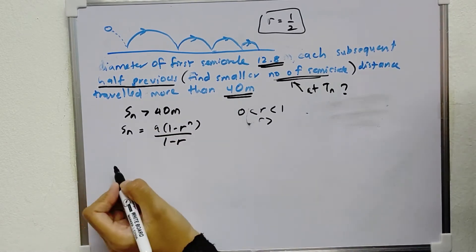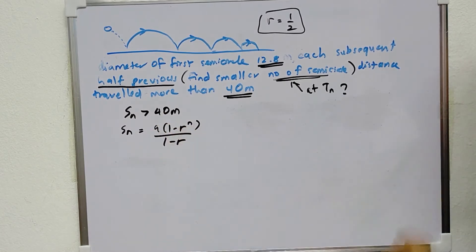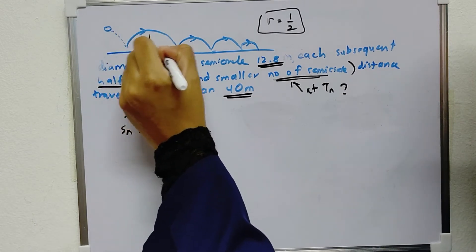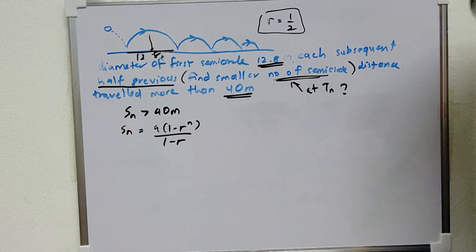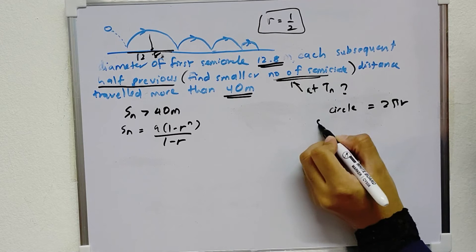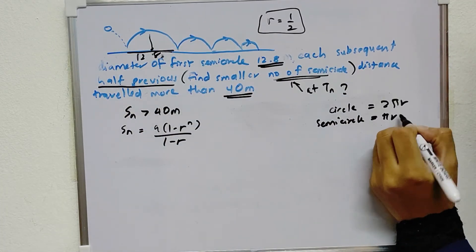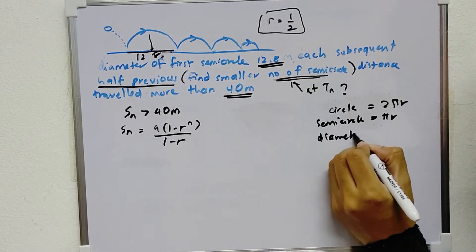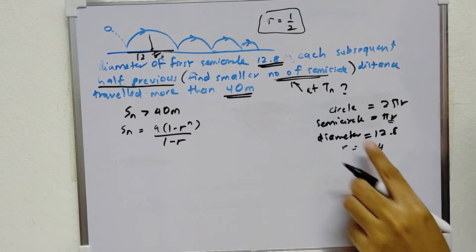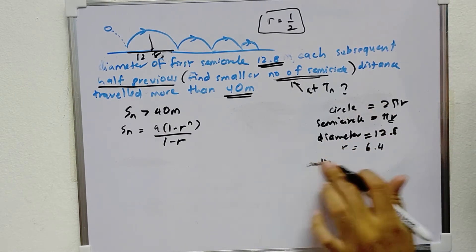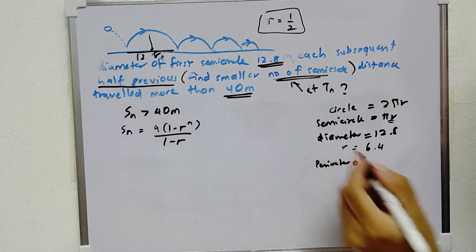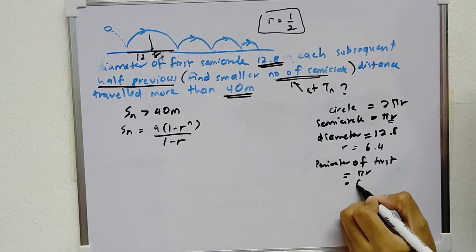So we need to find what A is. The diameter of the first semicircle is 12.8 meters. Since this is a semicircle, the perimeter of a full circle is 2πR, so the perimeter of a semicircle is πR. With diameter equal to 12.8, the radius is equal to 6.4. So the perimeter of the first term A is equal to πR, which is 6.4π.